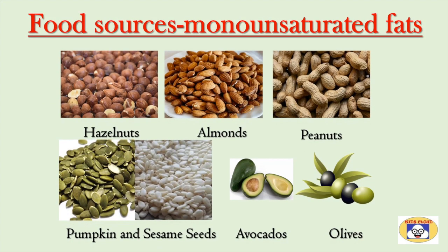From the following food sources we can get a good amount of monounsaturated fats. This mainly includes hazelnuts, almonds, peanuts, pumpkin and sesame seeds, avocados and olives.